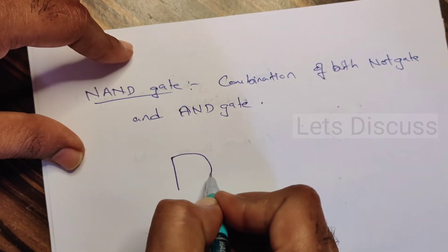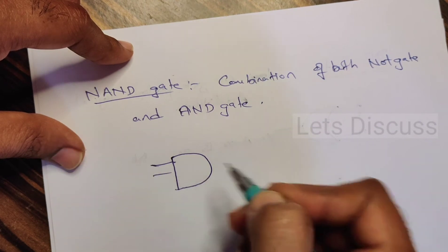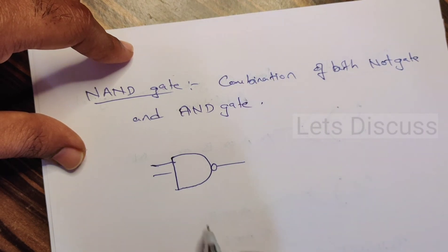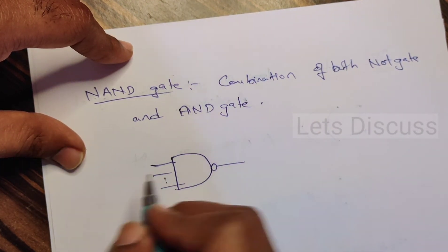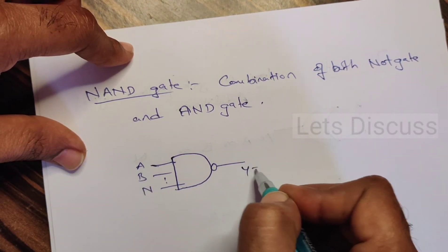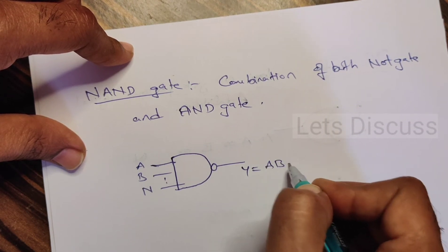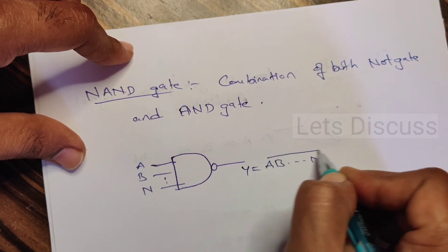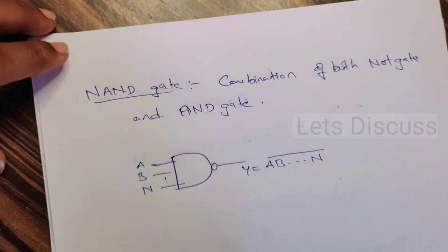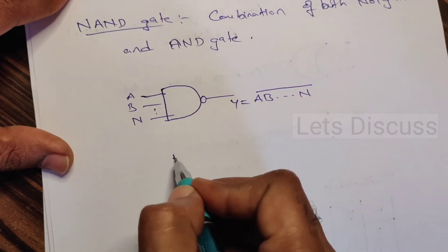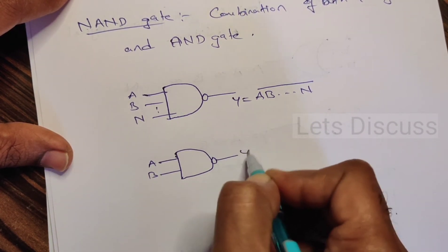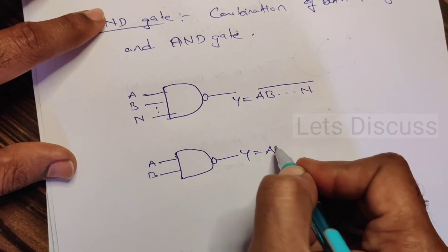The symbol of NAND gate — you all know this is the symbol of AND gate — just put a bubble in front of this and this is NAND gate. It can have any number of inputs A, B, up to N, and only one output Y = (A · B · ... · N) bar. Let's take a two-input NAND gate: inputs A and B, and output Y = (A · B) bar.